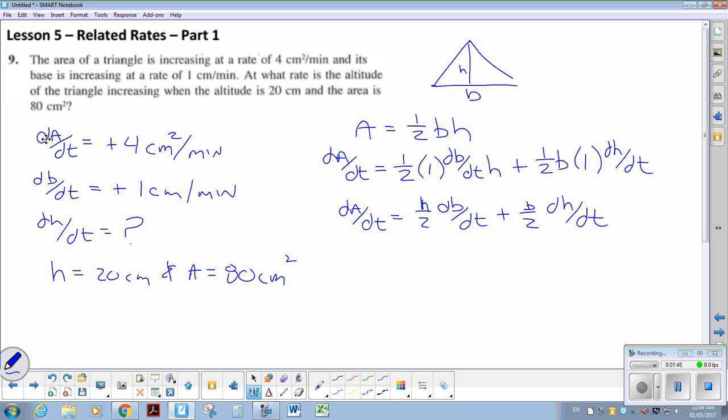I'm looking for dH by dt, so I'm going to isolate that. I'm going to multiply everyone by 2, just to get rid of my fractions. So I have 2 dA by dt minus, when I multiply by 2 that fraction will go away, minus h dB by dt. Multiply that by 2, I'm going to divide that by b, and that's going to equal dH by dt.